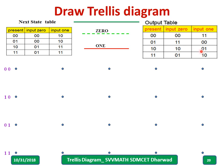Using the next state table and output table, we can now draw the Trellis diagram. We represent input 0 by a dotted line and input 1 by a solid line (some books may interchange these). Since the constraint length is 3 with 1 input bit and 2 state bits, there are 4 possible states: 00, 10, 01, 11. Starting from state 00 with input 0, the next state is 00 — draw a dotted line and label the output 00.